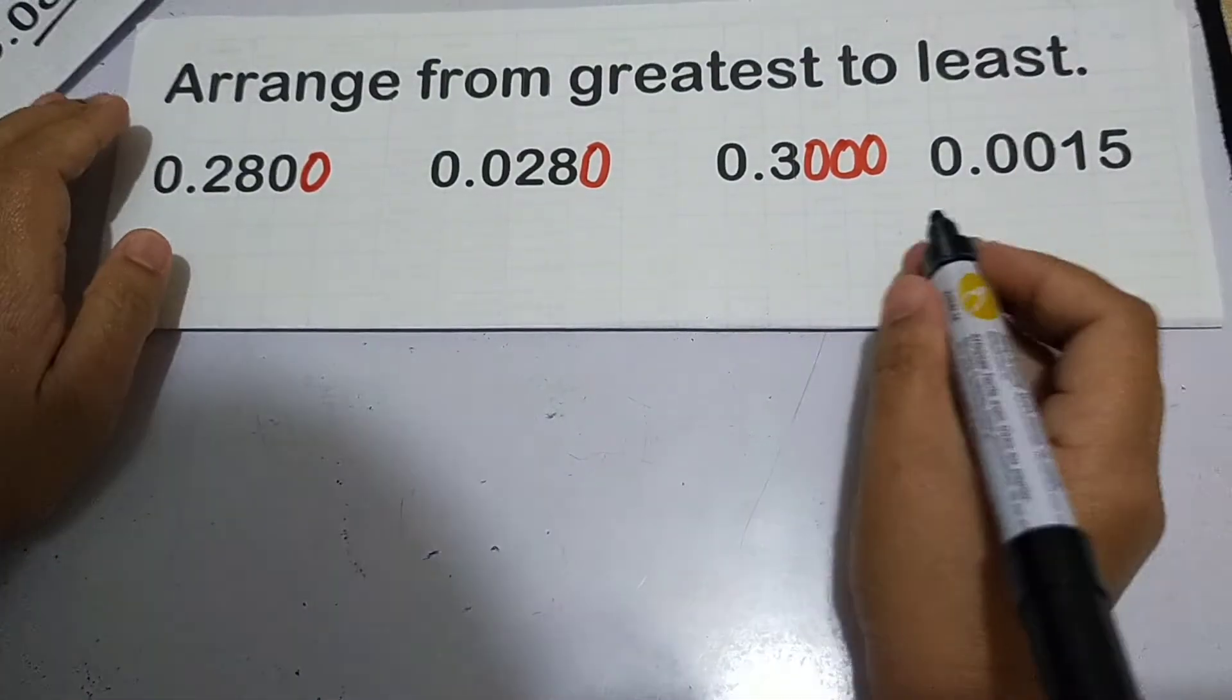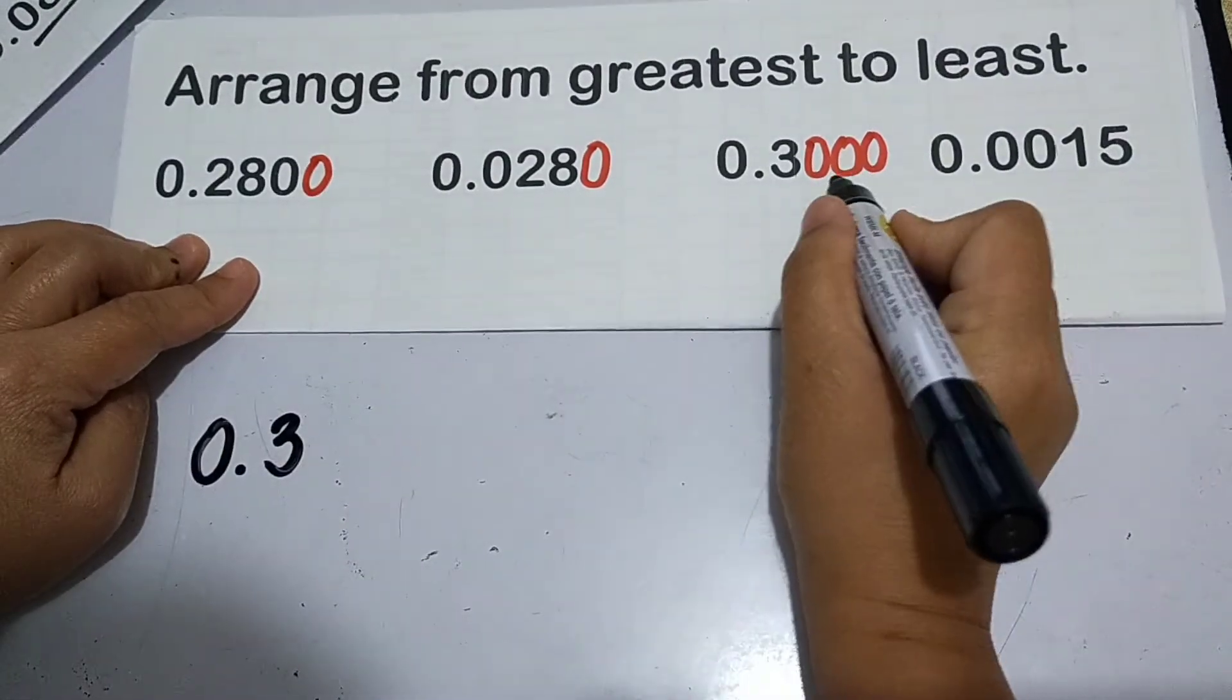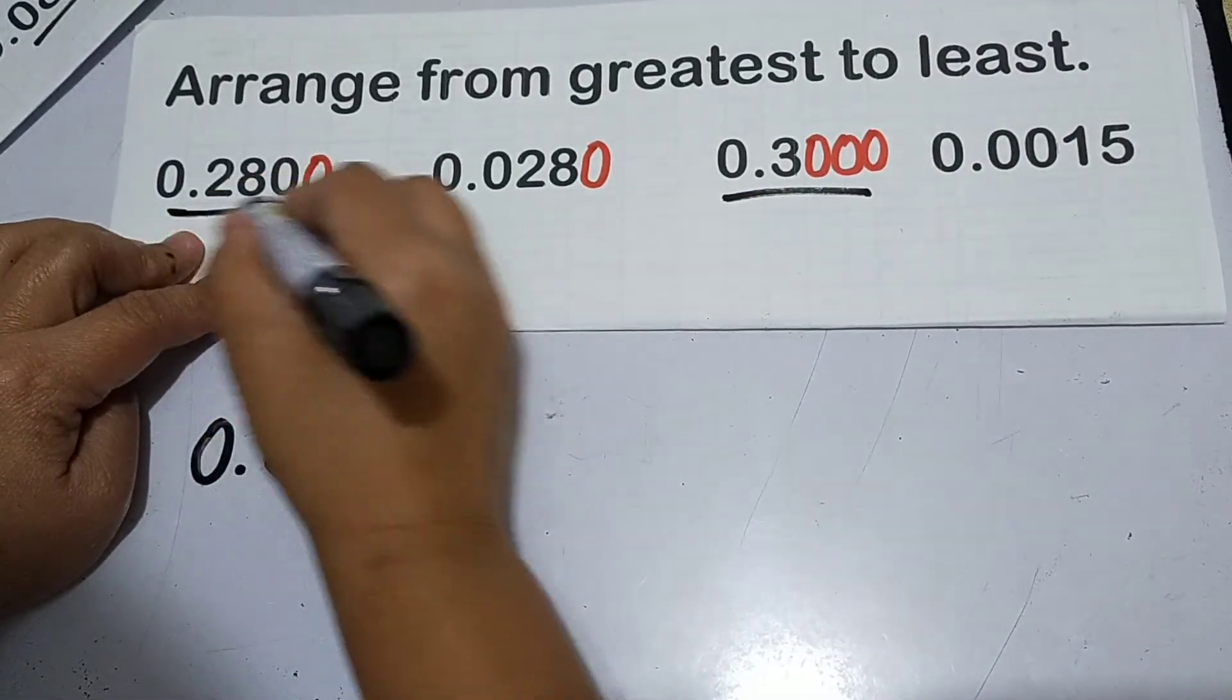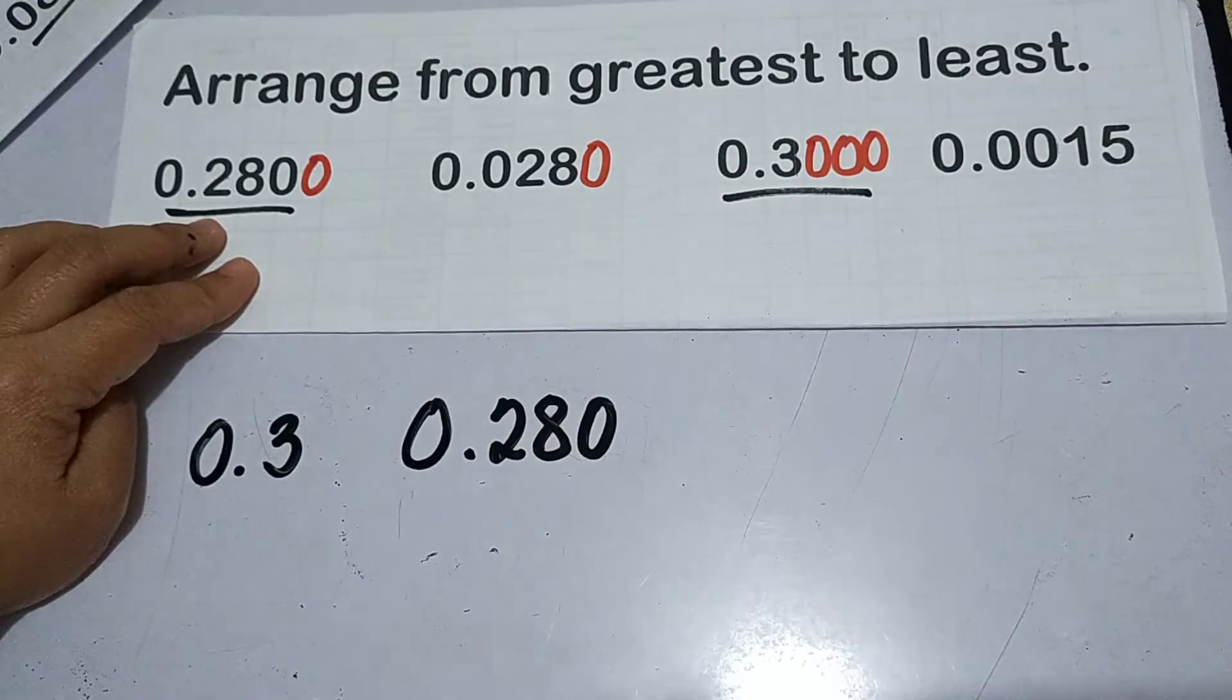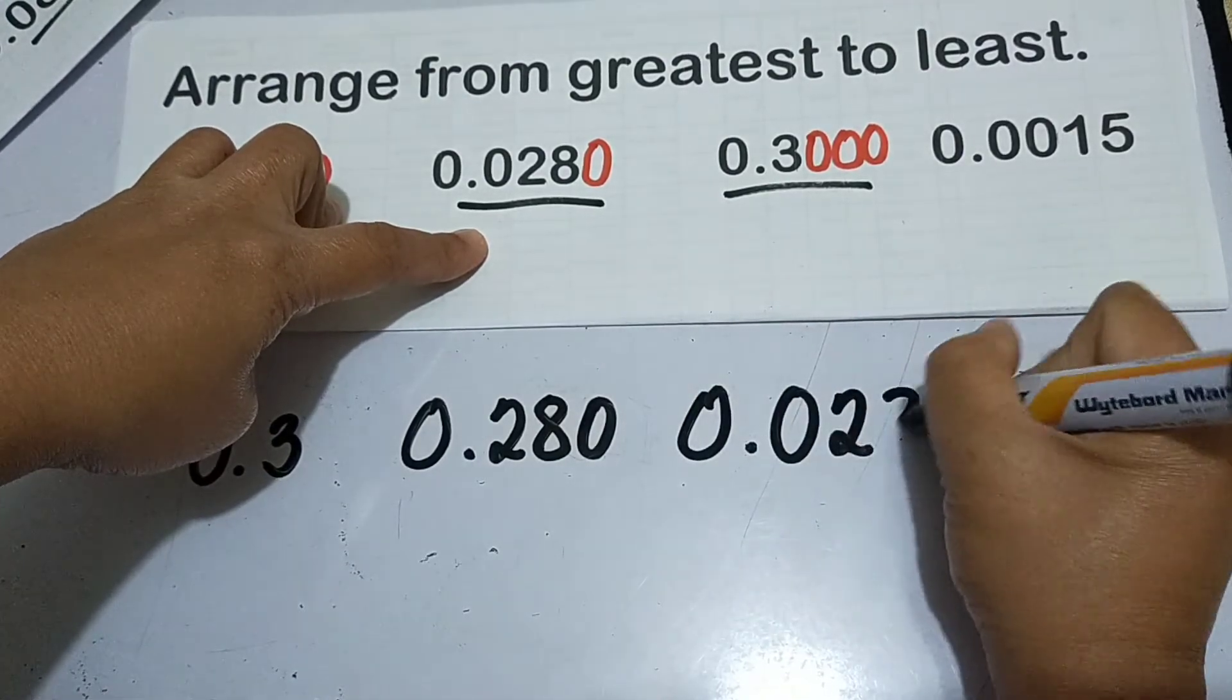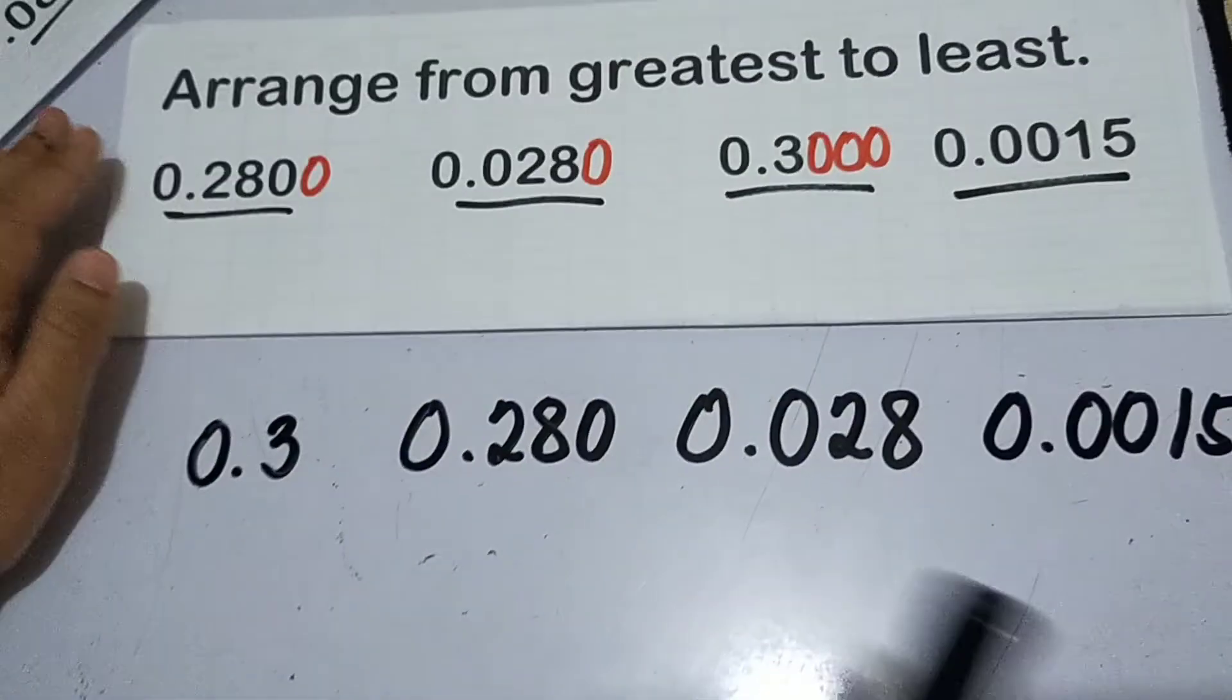Ano yung pinakamataas dyan? Ang pinakamataas ay eto. Si 3 tenths. Kasi kapag may imaginary zero, 3 thousand ten thousandths siya. Ano yung sumunod? Okay na tayo dito. Ang sumunod ay eto, 280 thousandths. Kasunod ay eto na, 28 thousandths. Then, eto na yung pinakamababa, 15 ten thousandths.